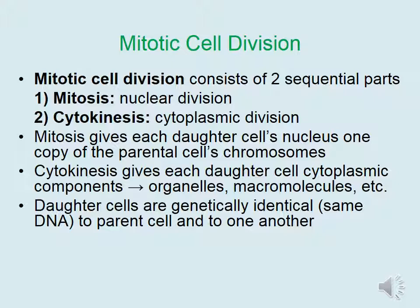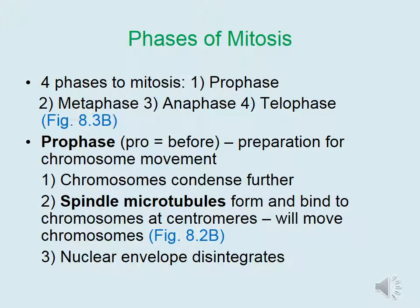The two daughter cells that are generated are genetically identical to one another and to the parent cell. In humans, the original parent cell started with 46 chromosomes that were copied, and each daughter cell ends up with the same 46 chromosomes.